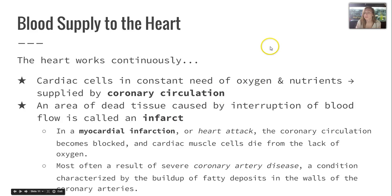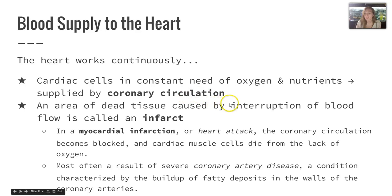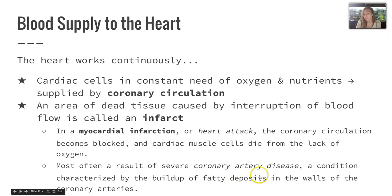The blood supply to the heart is critical because cardiac cells are constantly in need of oxygen and nutrients, supplied by coronary circulation. If there is an area of dead tissue caused by an interruption of blood flow, we call that an infarct. A myocardial infarction — otherwise known as a heart attack — occurs when the coronary circulation becomes blocked, causing cardiac muscle cells to die from lack of oxygen, normally a result of coronary artery disease characterized by fatty deposits in artery walls.